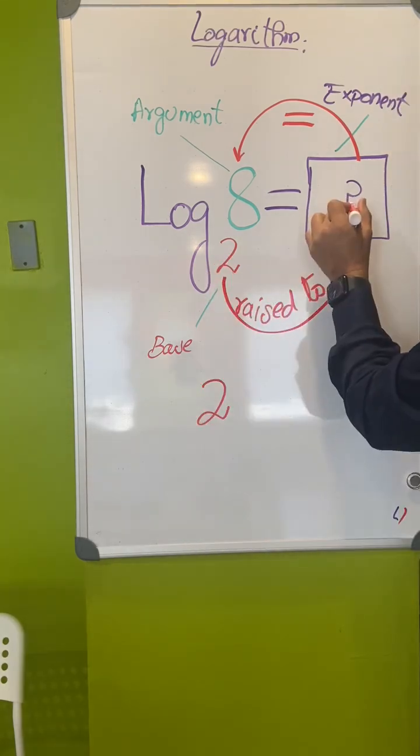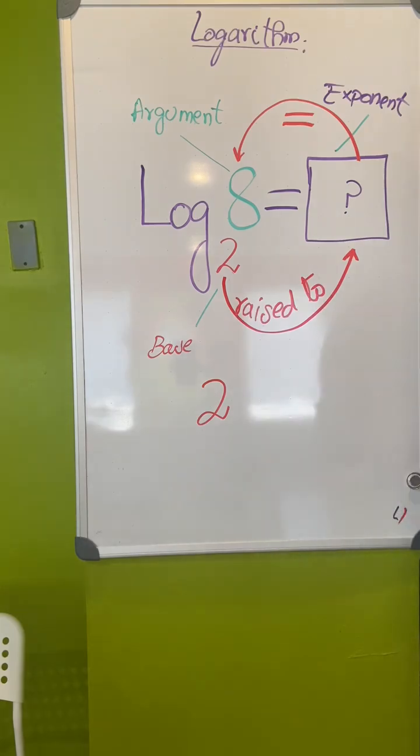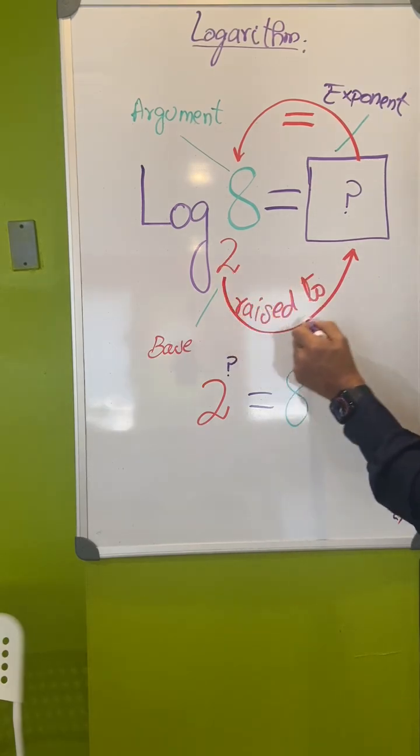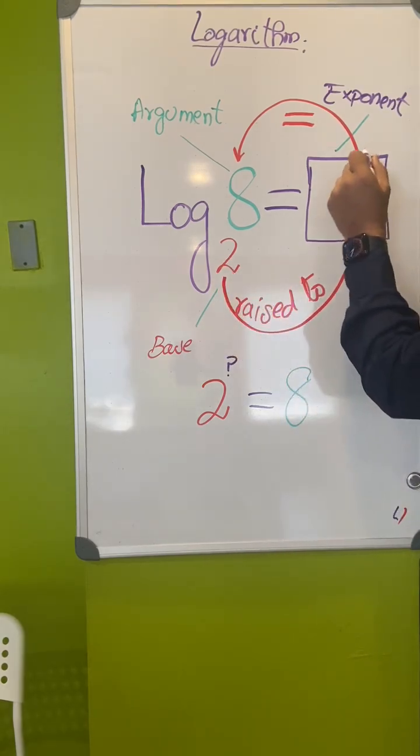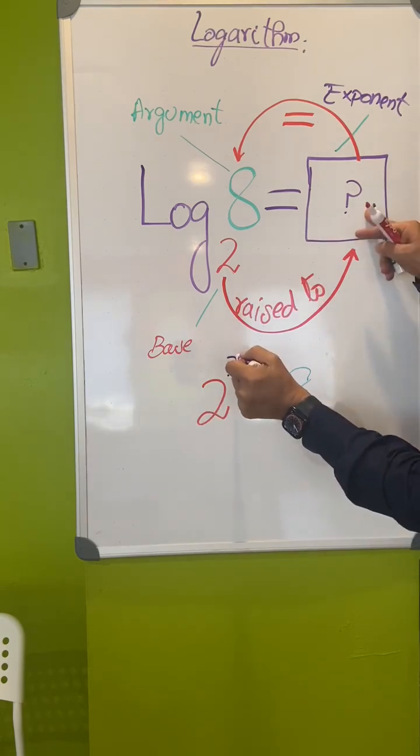So 2 is base, and this is exponent. Where do we have exponent? Equal to, can you make the connection? 2 raised to this equals 8.